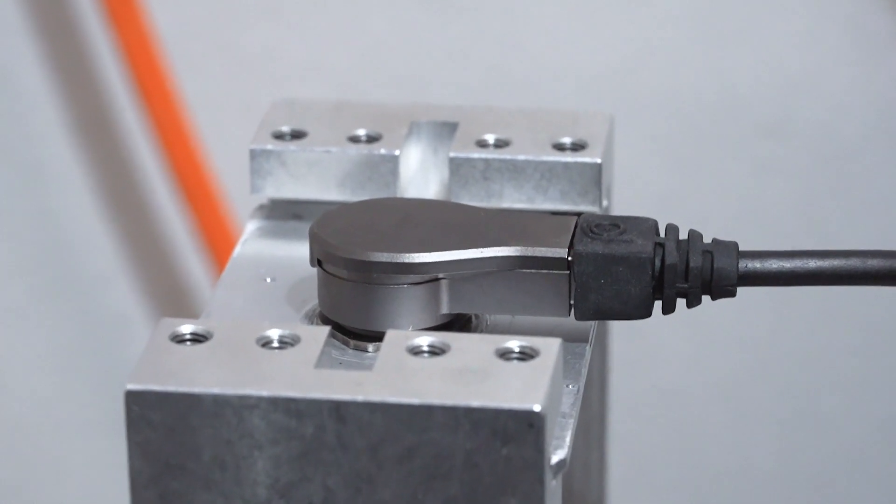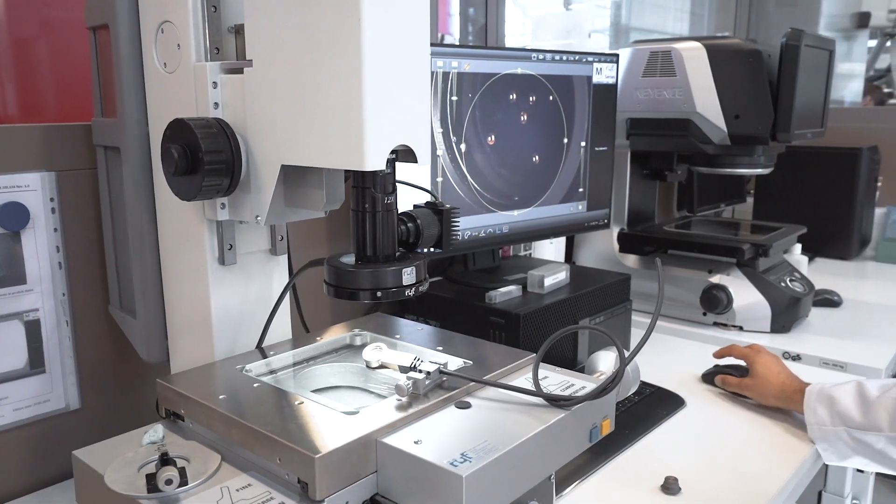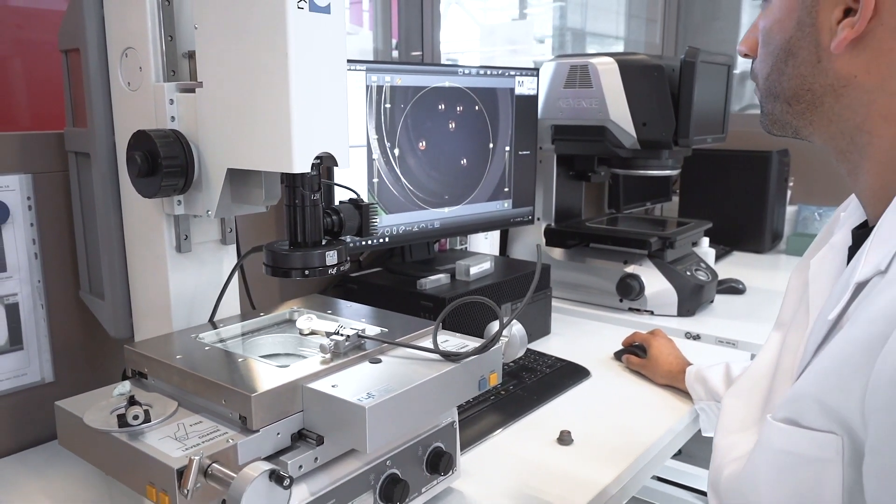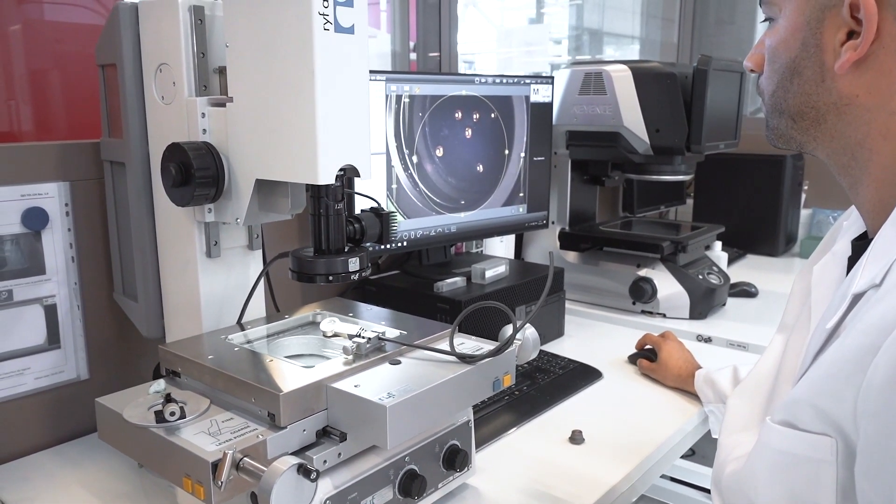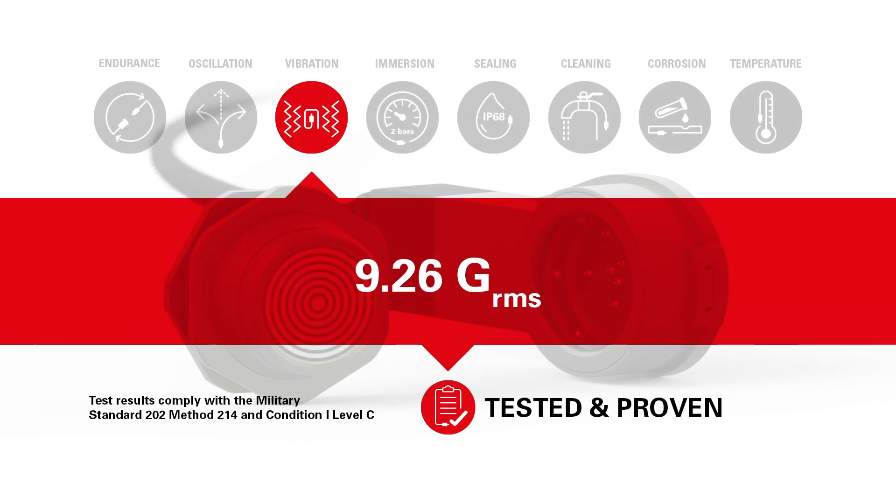Locking system and contacts are inspected using a high-performance optical microscope. During both tests, electrical signals are monitored to ensure that no microcuts smaller than one microsecond can occur.